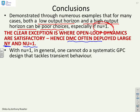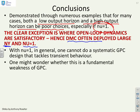With nu equals 1 in general, you cannot do a systematic design that tackles transient behavior. So if transient behavior is a problem, then you can't use nu equals 1. And you might argue this is a fundamental weakness of GPC, but it's more a question of understanding what these parameters ny and nu can do for you.